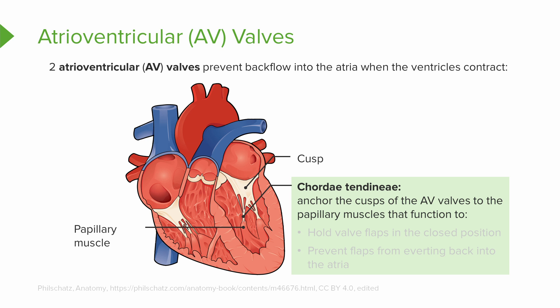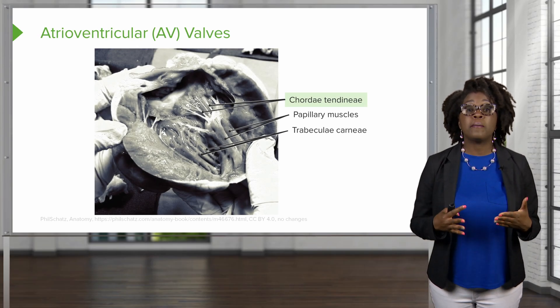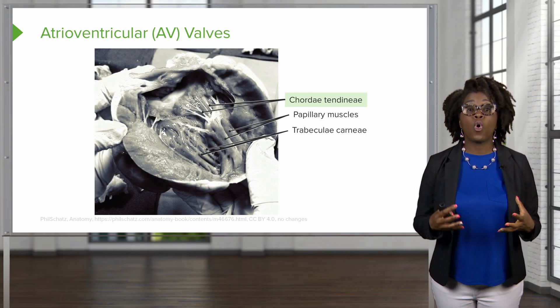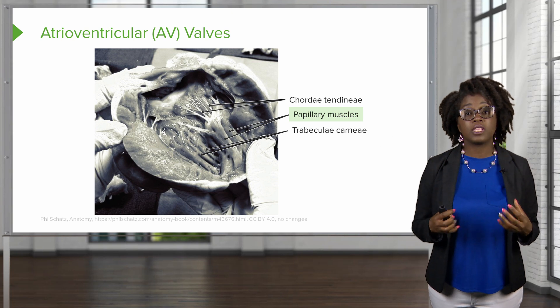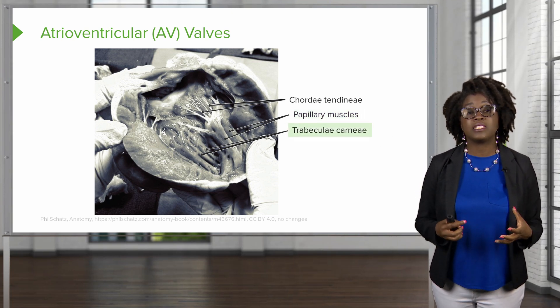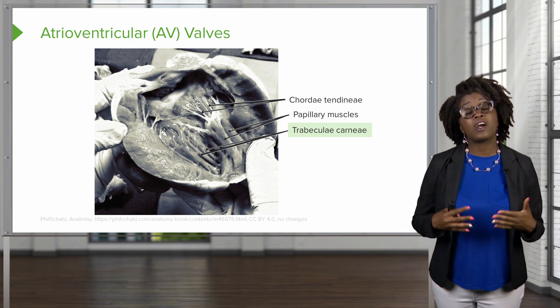On these valves, we have structures known as chordae tendinae. These are going to anchor the cusps of these AV valves to papillary muscles. These muscles hold the valve flaps in a closed position and prevent the flaps from everting back into the atria, especially when we have increased pressure in our heart during pumping. Here we have an image of the chordae tendinae, which are the cords connected to the valve, the papillary muscles that are controlling these cords, and the internal ridges inside of the atria known as the trabeculae carniae.